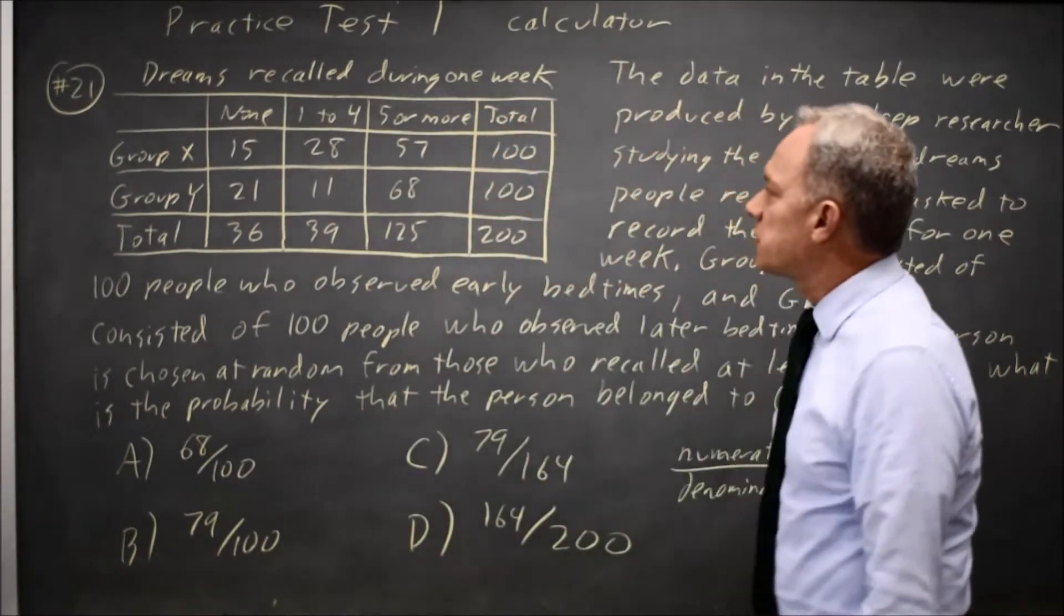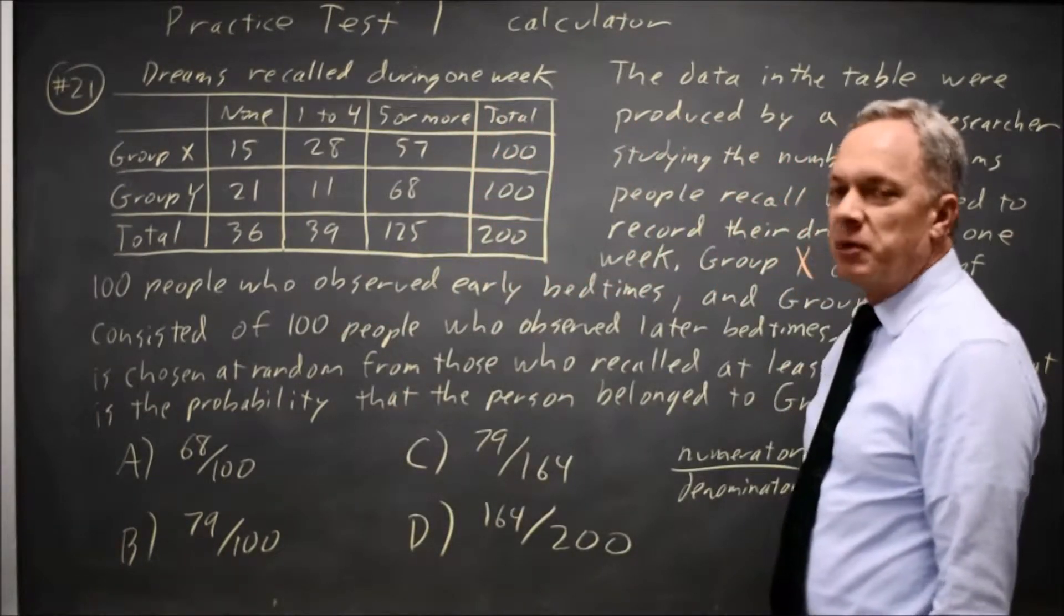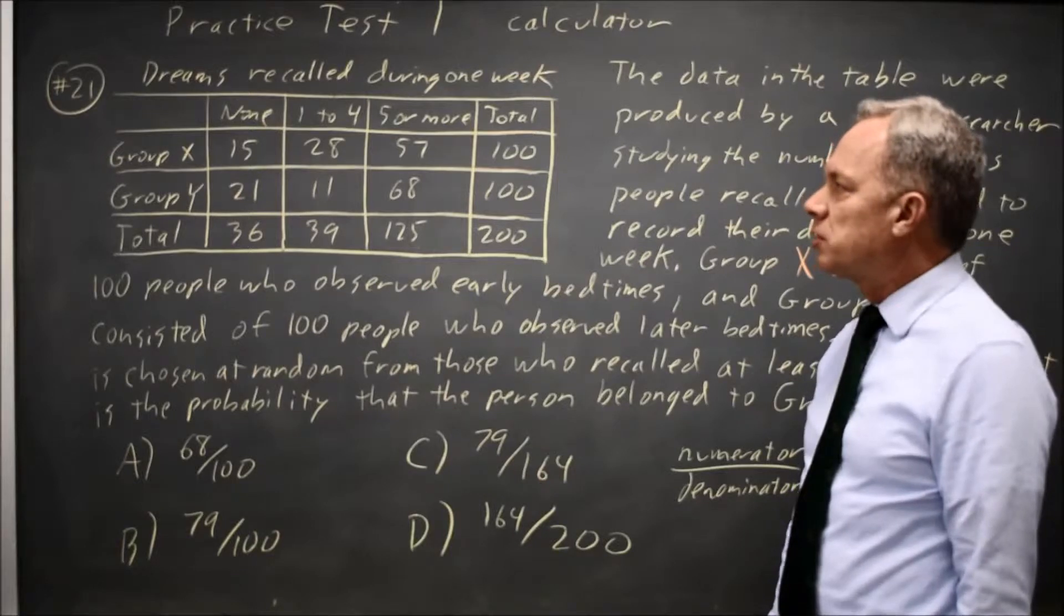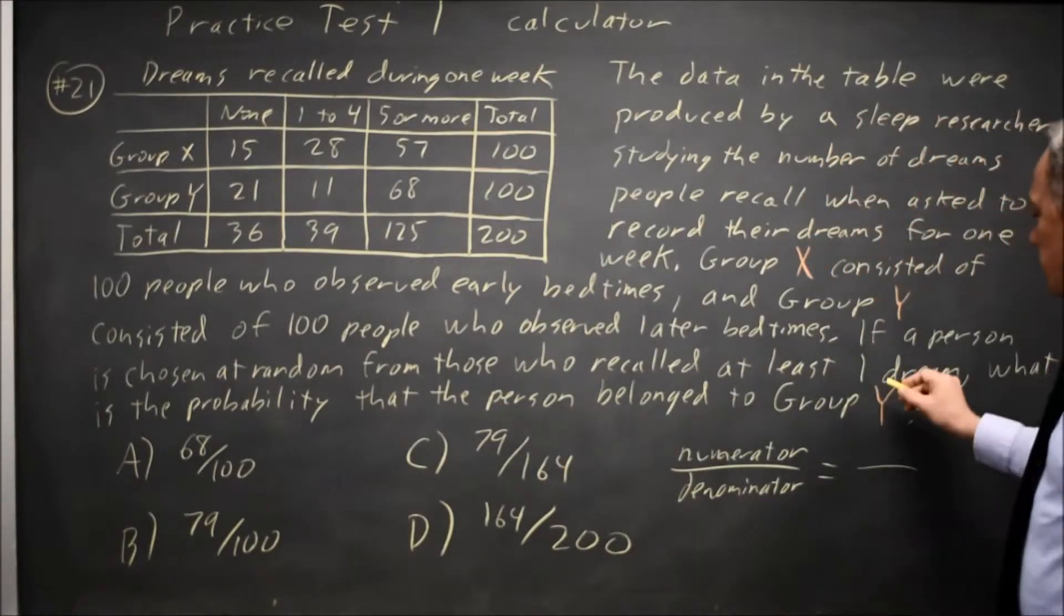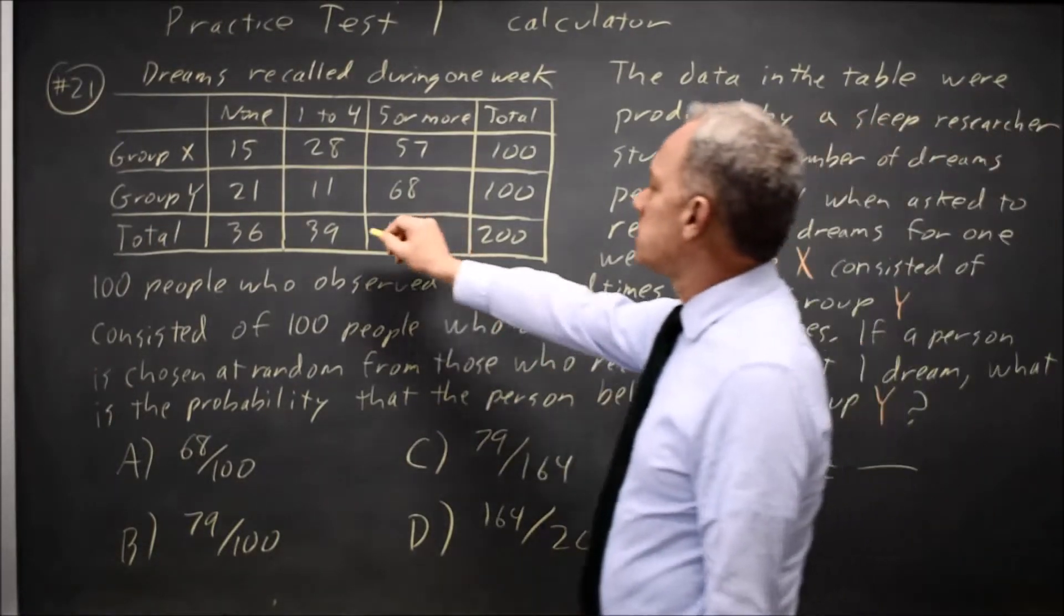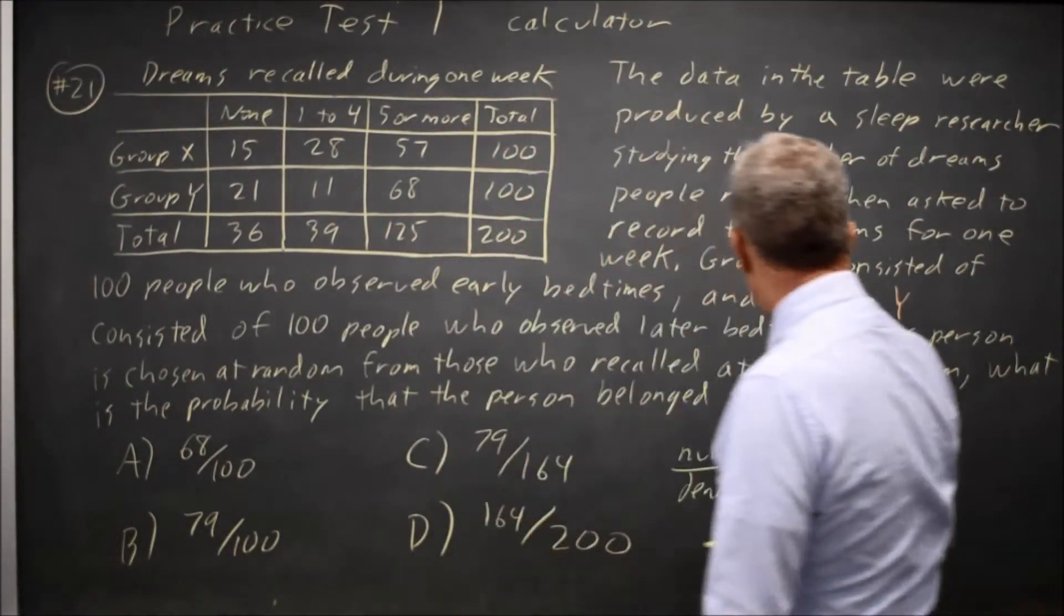You have to read your table labels carefully. The College Board may ask for one or more rows, one or more columns, or the entire table, but here we're looking for at least one dream, which is these 39 plus these 125.